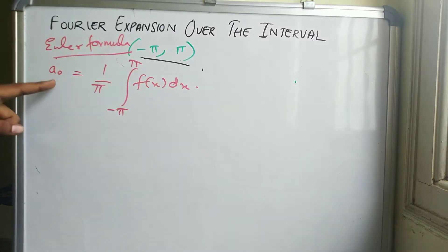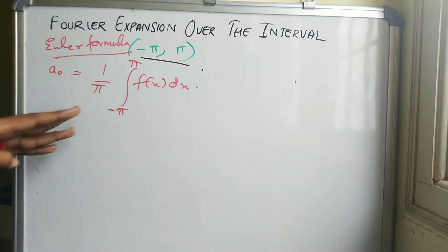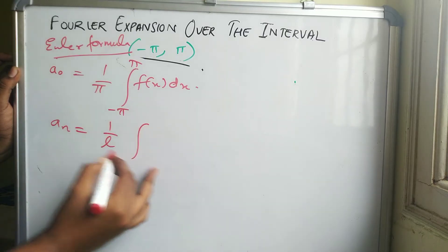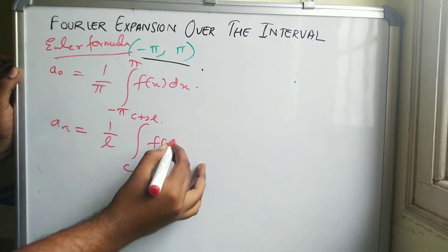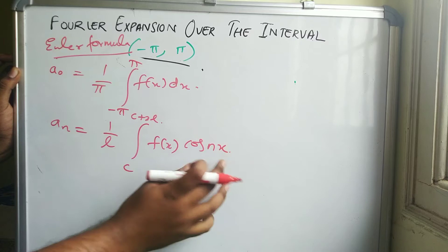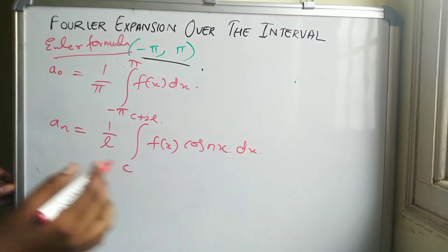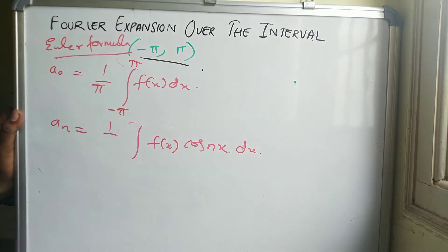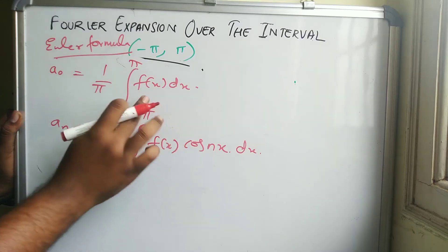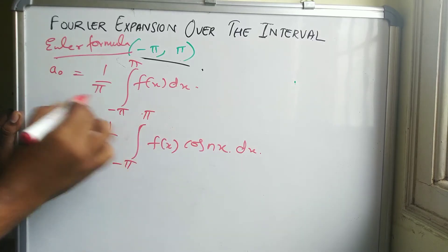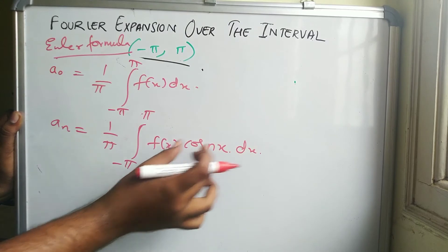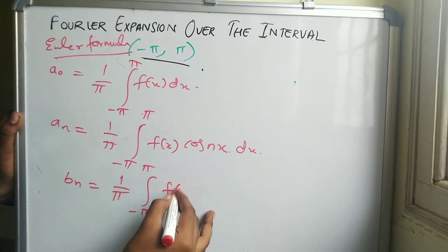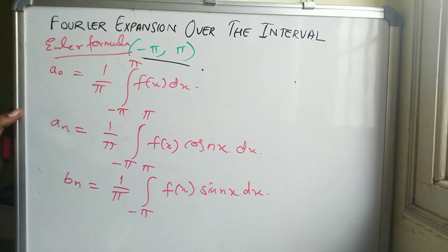For aₙ, the general formula is: aₙ = (1/l) times the integral from c to c plus 2l of f(x) cos(nx) dx. Replacing l with pi and limits with minus pi to pi, aₙ becomes (1/pi) times the integral from minus pi to pi of f(x) cos(nx) dx. Similarly, bₙ = (1/pi) times the integral from minus pi to pi of f(x) sin(nx) dx.